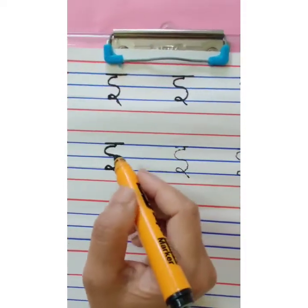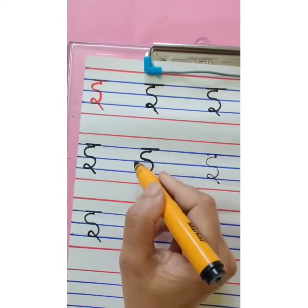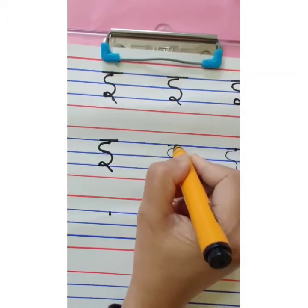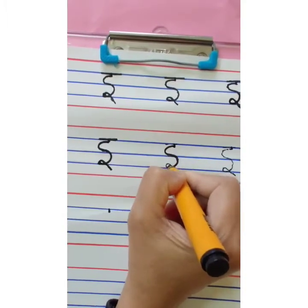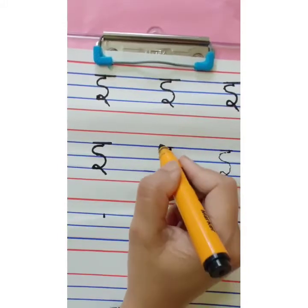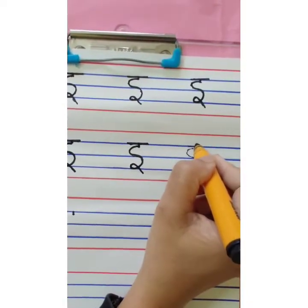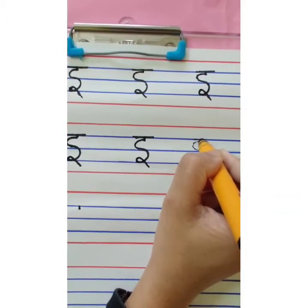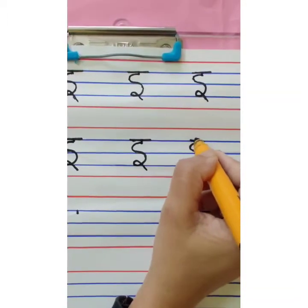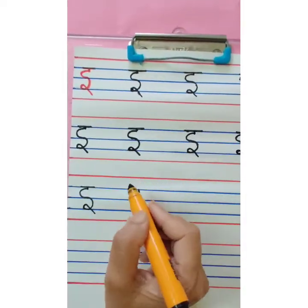Chhoti E. One more time — standing line, then C, then ulta C. This looks like the letter S, children. So you write letter S, then go up and take a small loop, then overhead small sleeping line. See children, whenever you are taking the loop, this loop should not touch the red line down, and this loop should not go up and touch the second blue line.